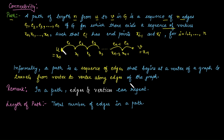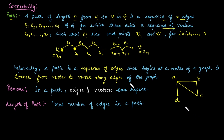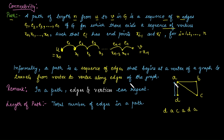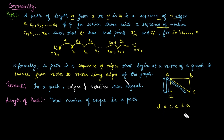For example, suppose you want to write a path starting from vertex d. One path is: d to a, then a to c, then c back to a, then back to d, and again back to a. So we travel first from d to a, then c, then back, then back to d, and again back to a — this is the path we are walking along vertices through edges.